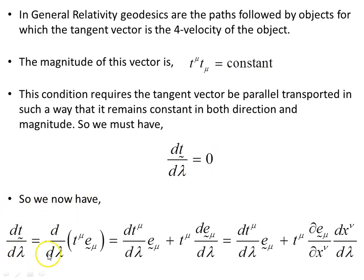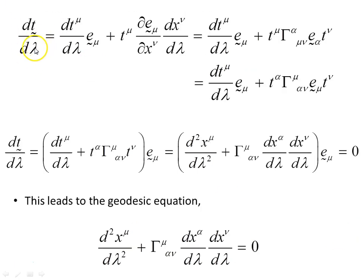We write dt/dλ as the derivative of the components times the basis vector, plus the component times the derivative of the basis vector. The derivative of the basis vector can be written as a partial derivative with respect to the coordinates times dx^μ/dλ, which is the tangent vector. The partial derivative of the basis vector with respect to the coordinates gives us the Christoffel symbol of the second kind times the basis vector. Here dx^μ/dλ is just the tangent vector component with index nu.